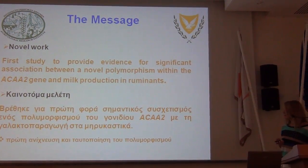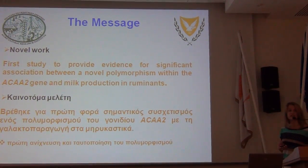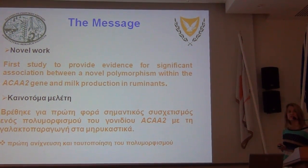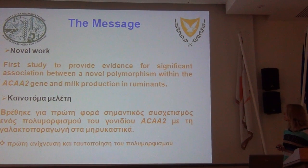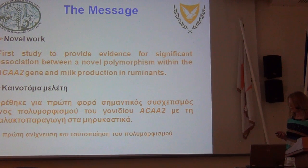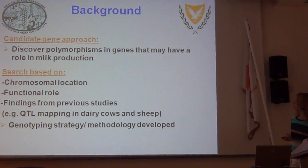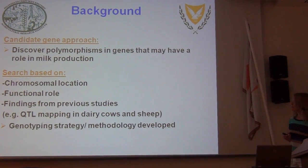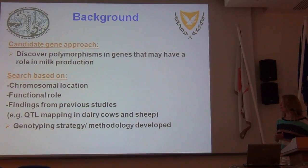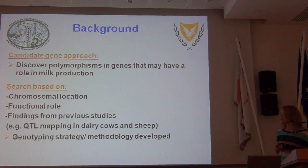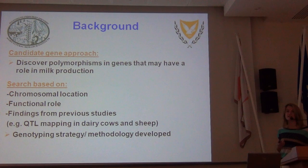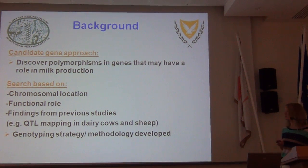So this is a new study in which we have, for the first time, a significant relationship with a new polymorphism in the ACAA2 gene. I won't go into much detail about the candidate gene approach — I think you've heard about it quite a lot in previous talks — but this was the approach followed in order to first identify polymorphisms in different genes.